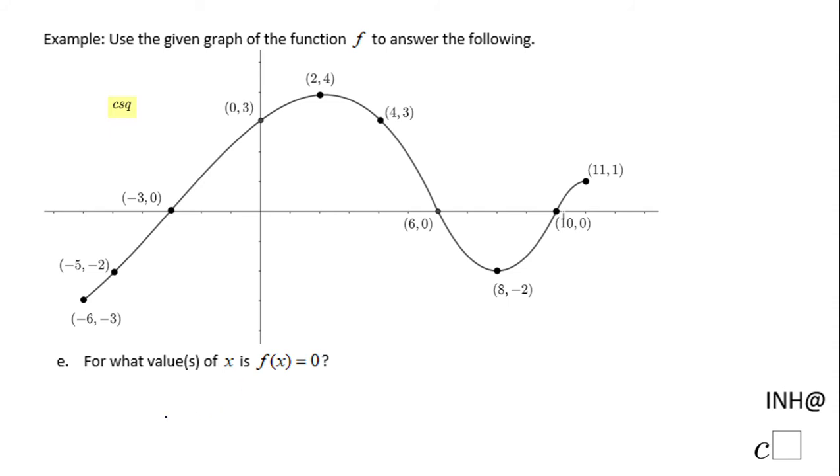Part E, for what value or values of x is the function equal to 0? When the function is equal to 0, if we move on the line, the first time we notice the function is 0 right here and we can't really see that 0.